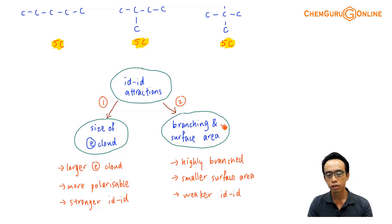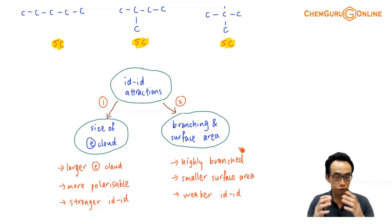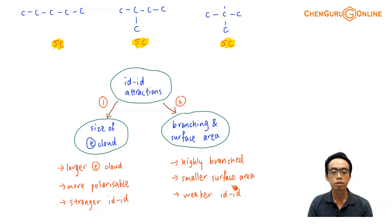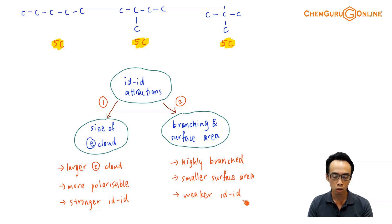The second factor is branching and the surface area for molecular interaction. If the molecule is more highly branched, it will be more spherical, giving it a smaller surface area for molecular interaction with its neighbors. This means the ID-ID will be weaker, and in turn the boiling point will be lower.